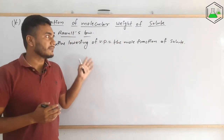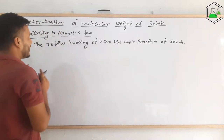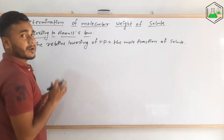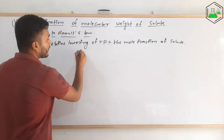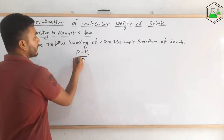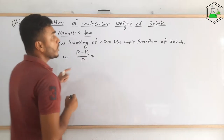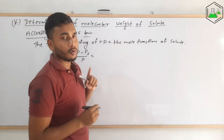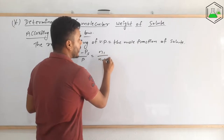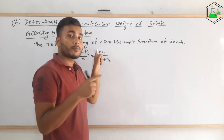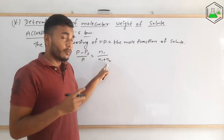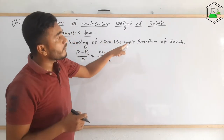We derived a mathematical expression for this statement as well. The relative lowering of vapor pressure is given by the expression (P minus Ps) divided by P, which equals the mole fraction of the solute. The mole fraction of solute is n1 divided by (n1 plus n2), where n1 is the number of moles of solute, n2 is the number of moles of solvent, and n1 plus n2 is the total number of moles.